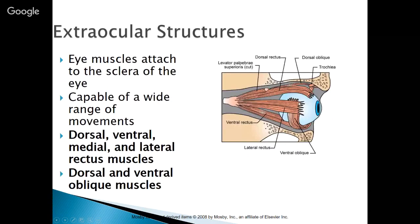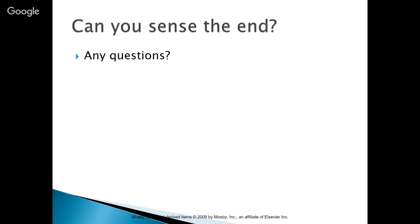There are also muscles attached to the sclera of the eye that allow a wide range of movements. These include dorsal, ventral, medial, and lateral rectus muscles — meaning straight muscles — and dorsal and ventral oblique muscles that go through a trochlea, like a pulley system, to change the direction in which you can turn your eyes. That's the end of our lecture. If you have any questions, please bring them.